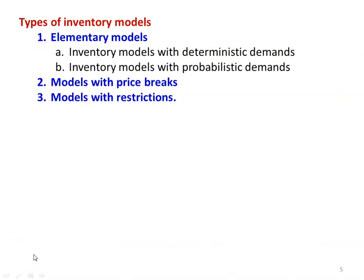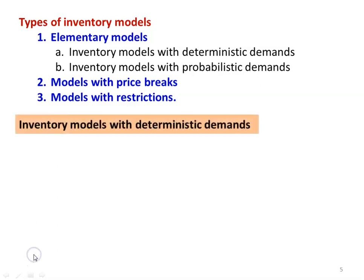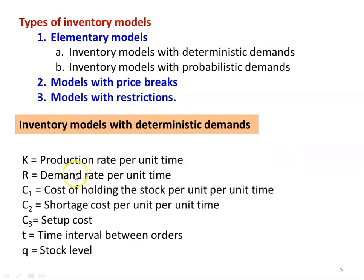The different types of inventory model are: inventory model with deterministic demand, inventory model with probabilistic demand, model with price breaks, and model with restrictions. In this lecture series, we will discuss the elementary deterministic model, probabilistic model, and model with price breaks. For the deterministic demand model, the terminology: K is production rate per unit time, R is demand rate per unit time, C1 is holding cost per unit per unit time, C2 is shortage cost per unit per unit time, C3 is setup cost, T is the time interval between orders, and q is the stock level.